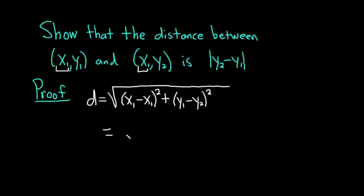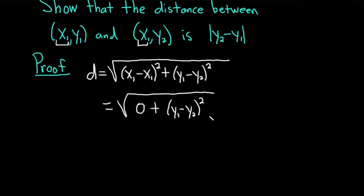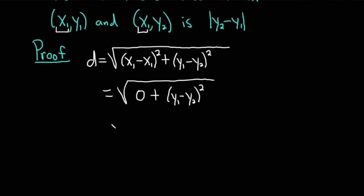So this is going to be 0. I'll show all the steps. This is 0 squared which is just 0 plus (y₁ - y₂)². Okay, so this equals the square root of (y₁ - y₂)². And this is actually equal to the absolute value of y₁ minus y₂.